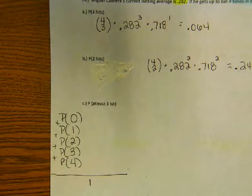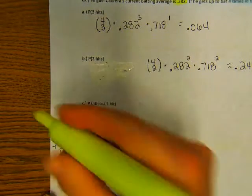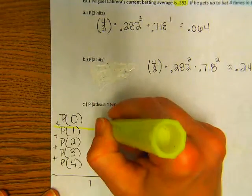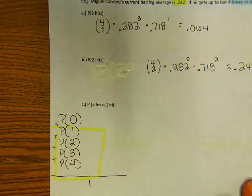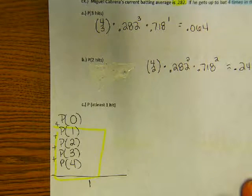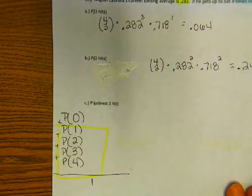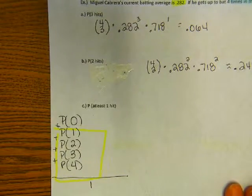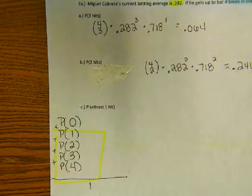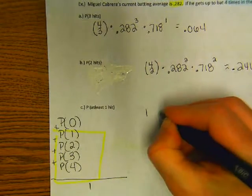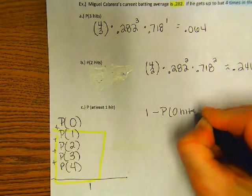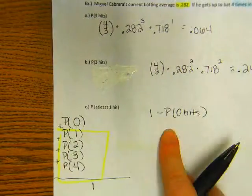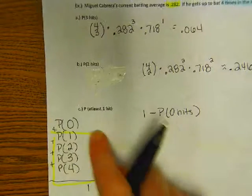Because that would be all the things that could happen in the game. If I'm saying I want you to do at least one hit, that means you'd have to do all four of these and add them up. What might be less work? Figure out zero and subtract it from one, right?